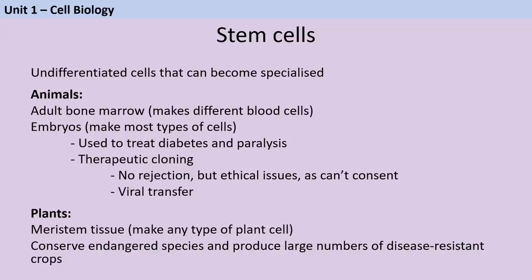Embryonic stem cells are more useful for treating conditions such as paralysis and diabetes. In therapeutic cloning, an embryo is made with the same genes as the patient, so if those stem cells are harvested and used to treat the patient, they won't be rejected by the immune system because they're genetically identical to the patient — meaning the patient won't need immunosuppressant drugs, which would make them more susceptible to infectious diseases. On the other hand, there are ethical issues: the embryo can't consent to the procedure, and some people are uncomfortable with bringing an embryo into the world only to destroy it. Embryonic stem cell treatment can also lead to viral transfer. Plants have meristems containing stem cells that can become any kind of cell, making it easy to clone plants using cuttings — useful for conserving endangered species or producing disease-resistant crops.